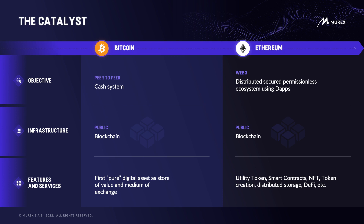This gave ideas to others, and that was Ethereum. They had much more ambition — they wanted a distributed, secure, permissionless ecosystem using decentralized applications on a public blockchain. They wanted much more than just a pure digital asset: the capability to deploy utility tokens, smart contracts, non-fungible tokens, distributed storage, decentralized finance, and many other applications that can be decentralized on a public blockchain.